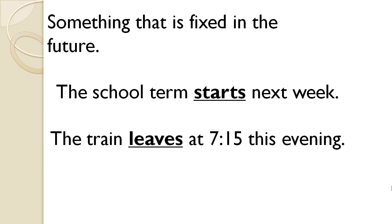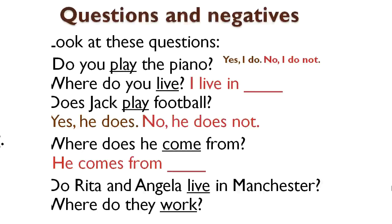The school starts next week. The train leaves at 7:15 this evening. So does that mean that every day at this time the train leaves at 7:15? Absolutely. Because it's something that is scheduled — something has a start time and end time, like when you have your curriculum for this month or for this year. It does not change.